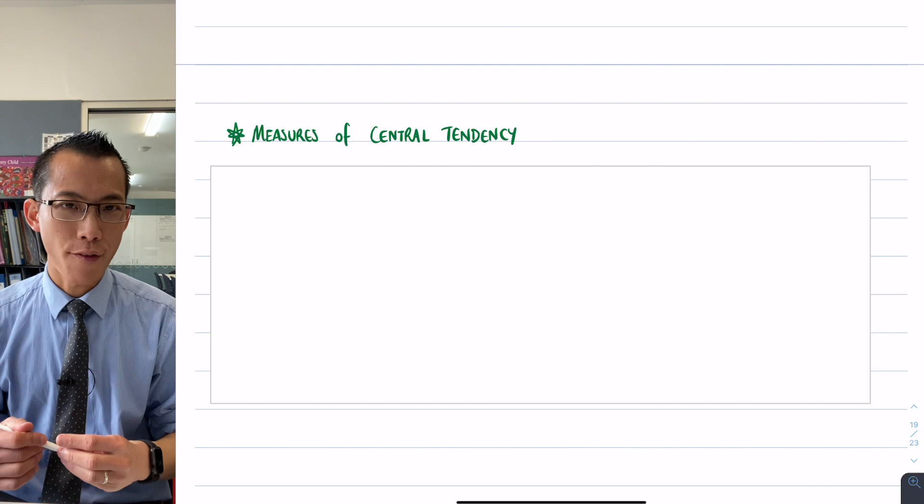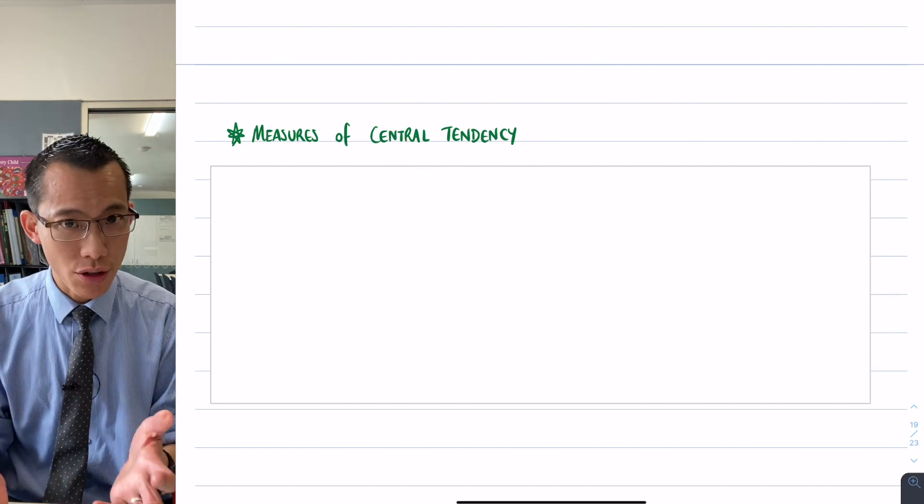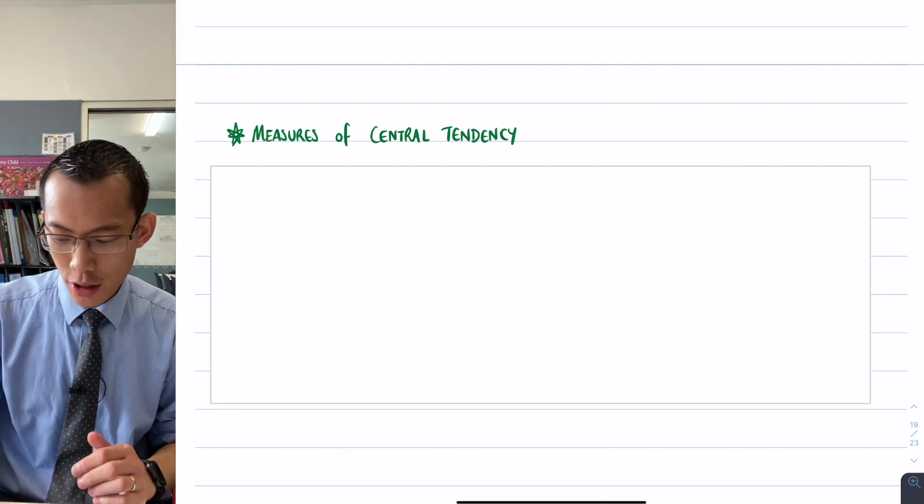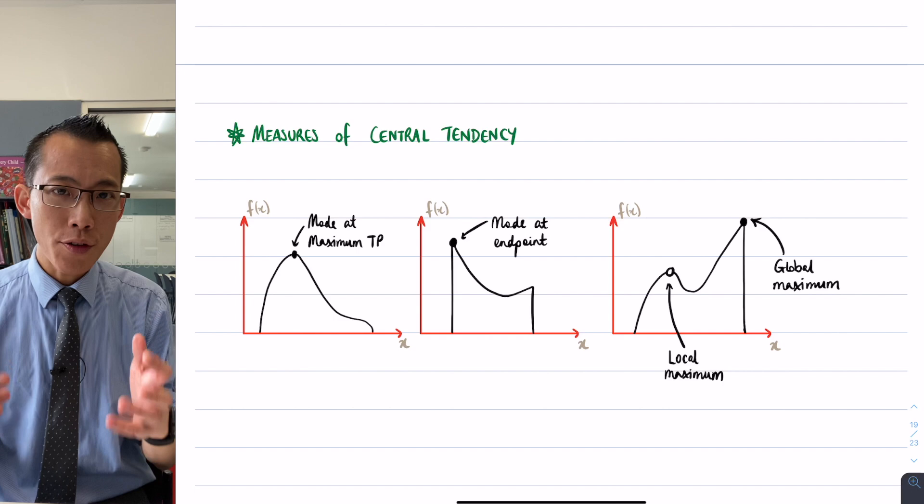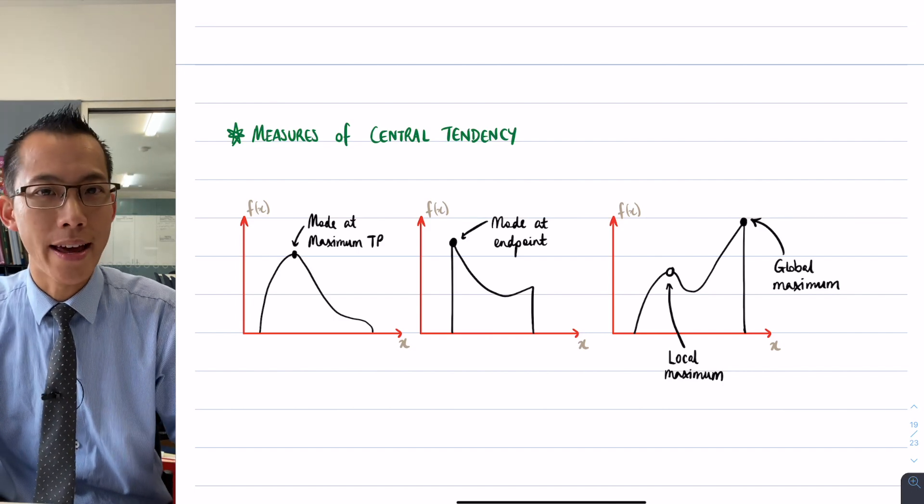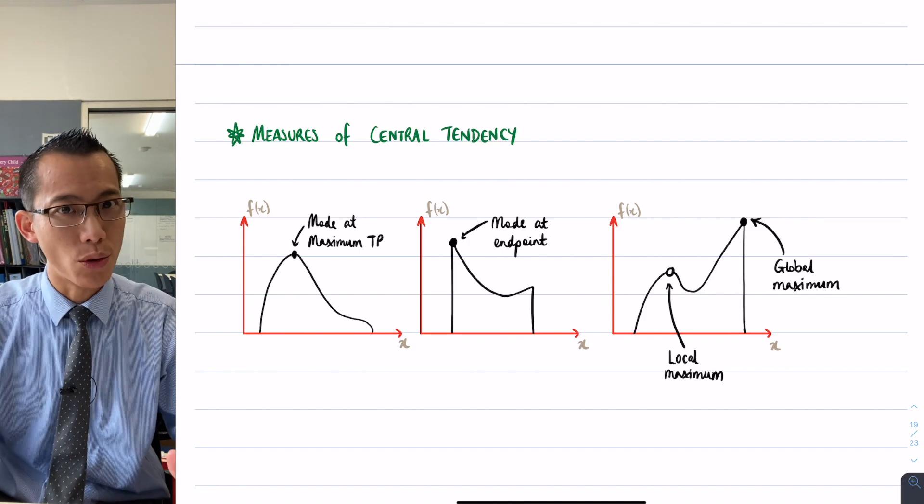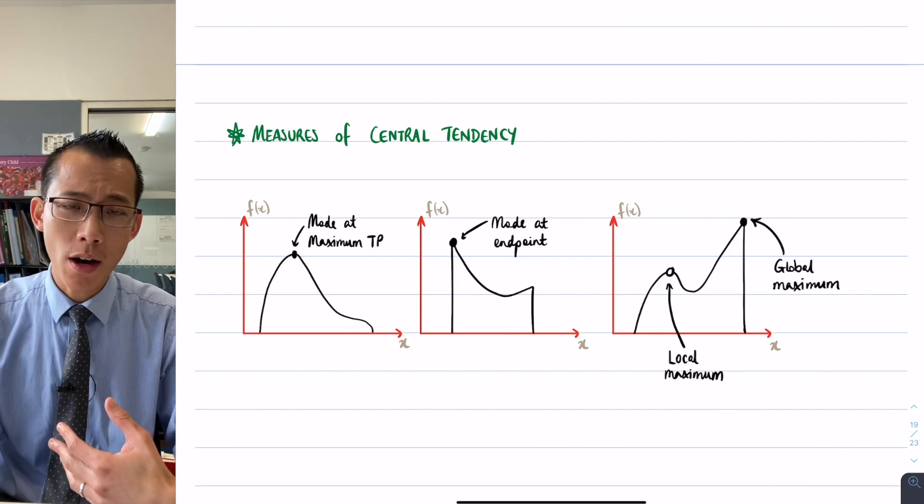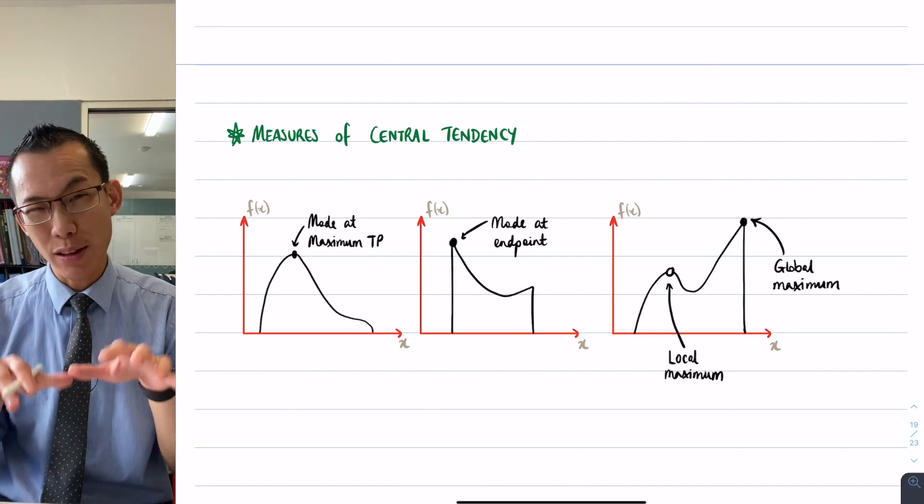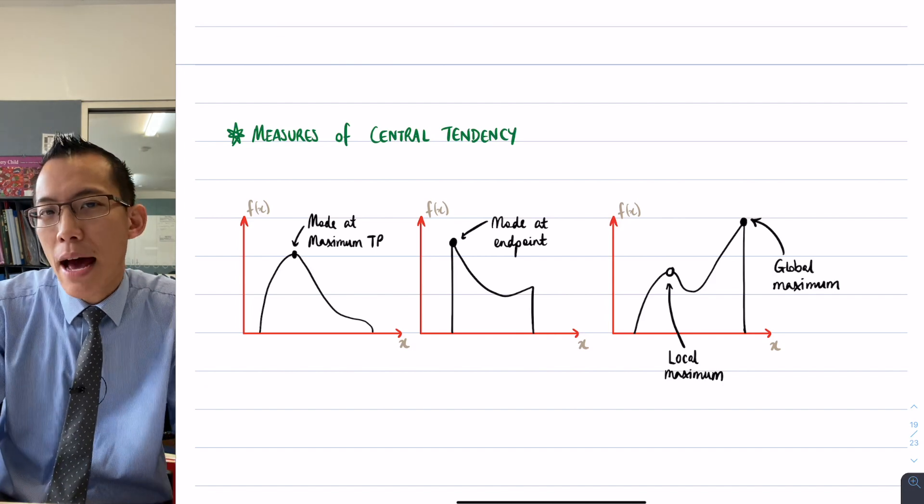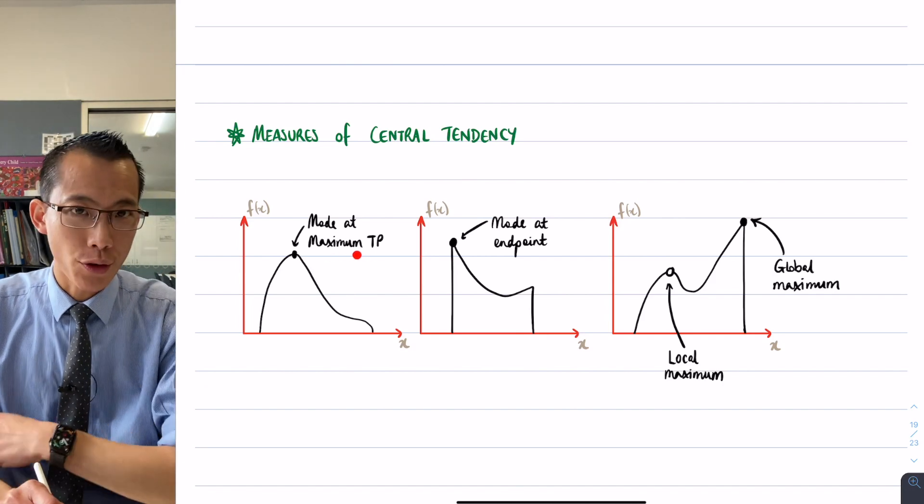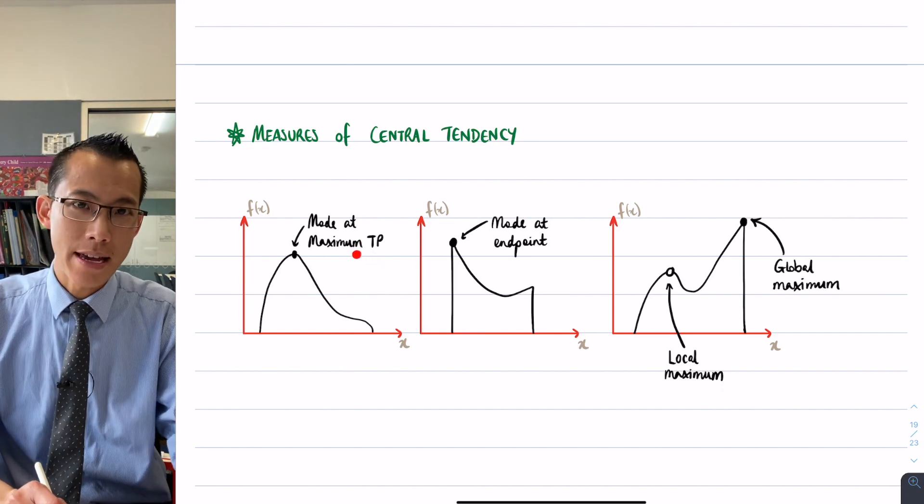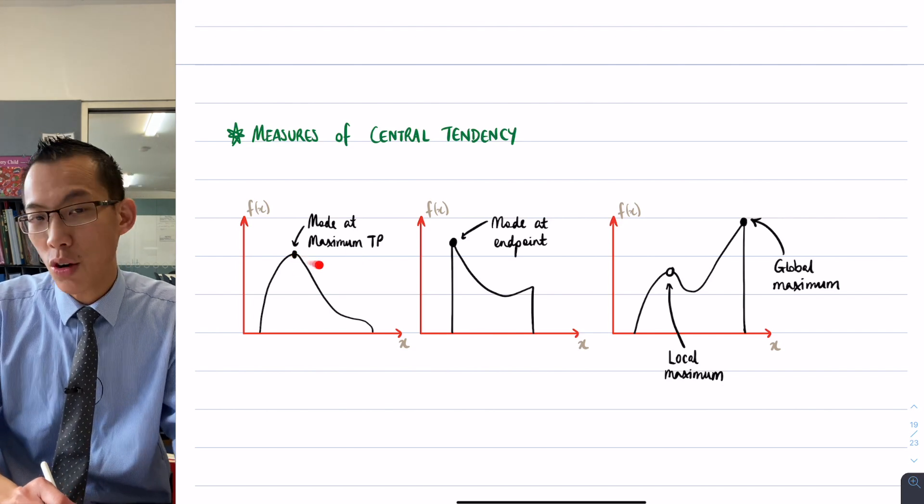But when it comes to probability density functions and probability distributions, we have to think about these same ideas—mean, mode, and median—through a different lens. The first one we looked at was the mode. If you've got the most common score in your data set, it's the most probable score to occur if you choose one at random. So on your probability density function, you're looking for the highest probability, and that happens in a variety of ways. For example, if you use calculus, a stationary point which ends up being a maximum turning point may be where your highest probability is, but that's not always the case.